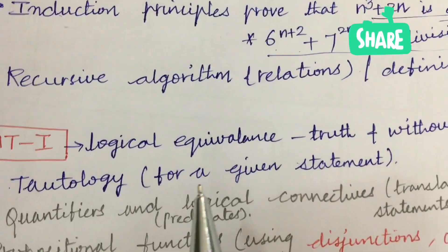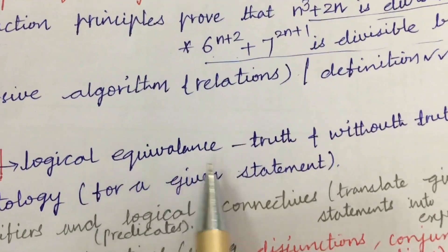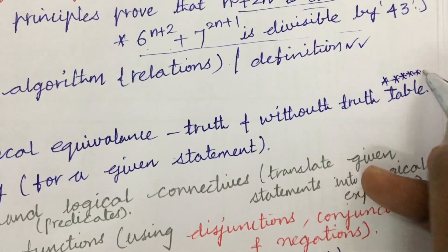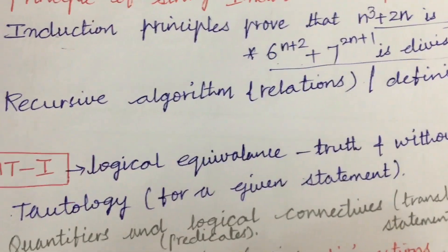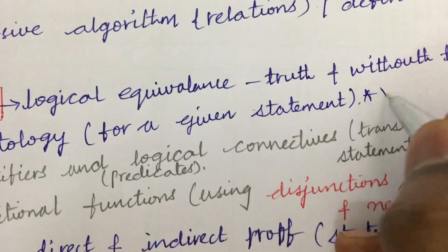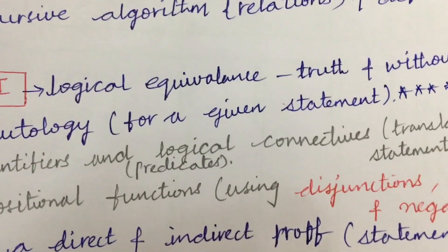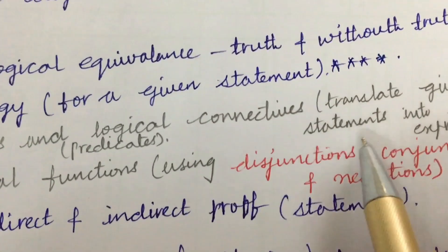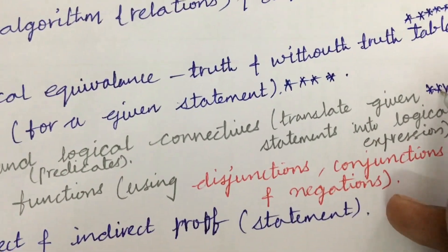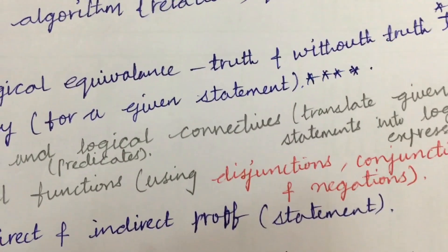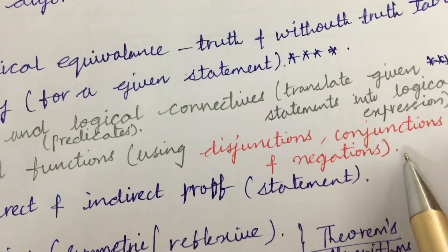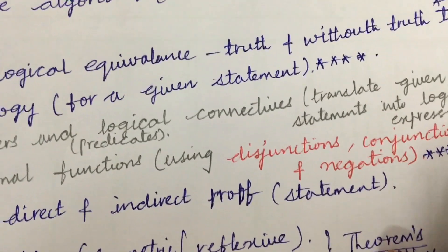The first unit is also very, very important. Logical equivalence with and without truth tables is a very important sure-shot question. Please work out all the relations and problems related to tautology, and check whether a given statement is a tautology. Quantifiers and predicates — translating a given statement into a logical expression using quantifiers, predicates, and logical connectives — are also very important. Propositional functions using disjunctions, conjunctions, and negations for a given statement are very, very important as well.